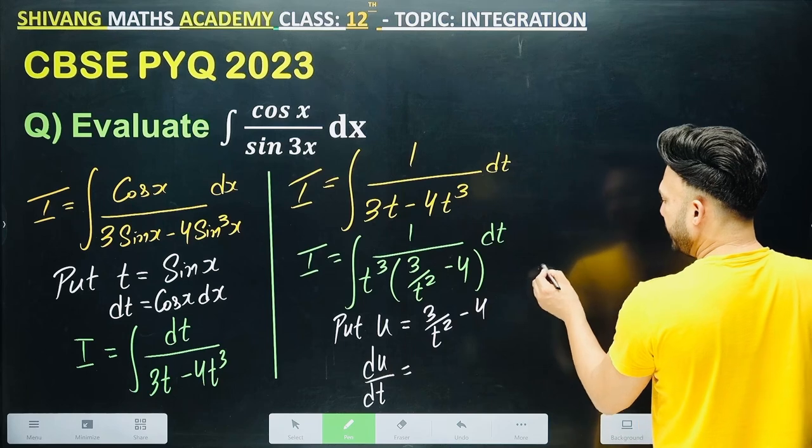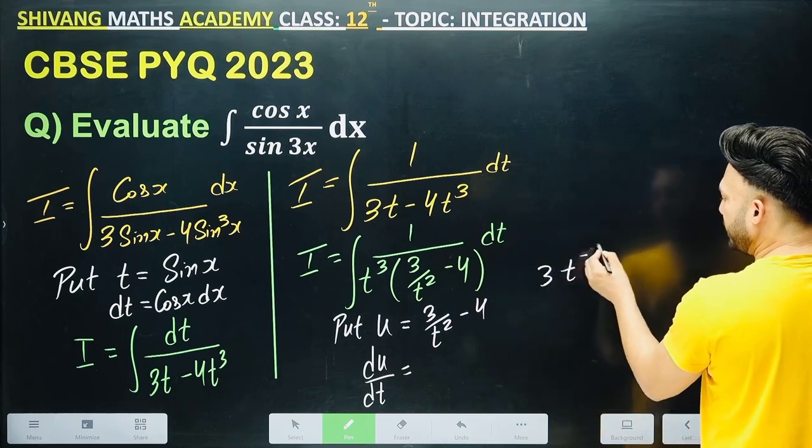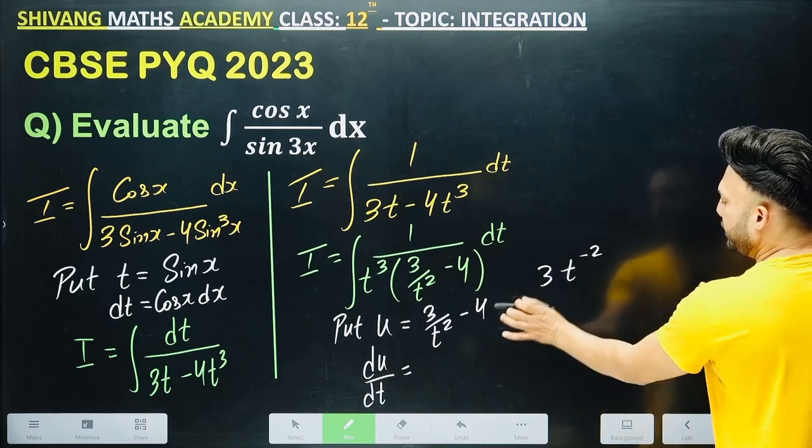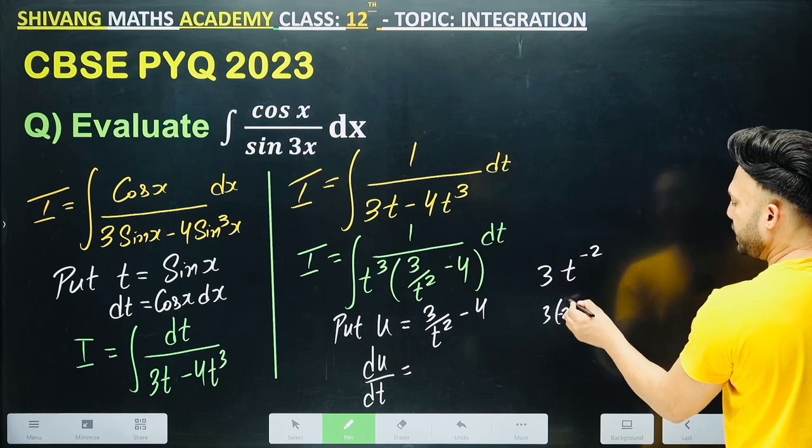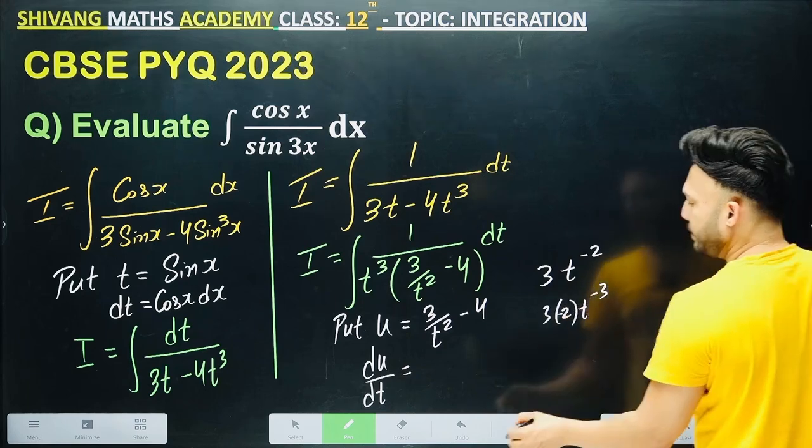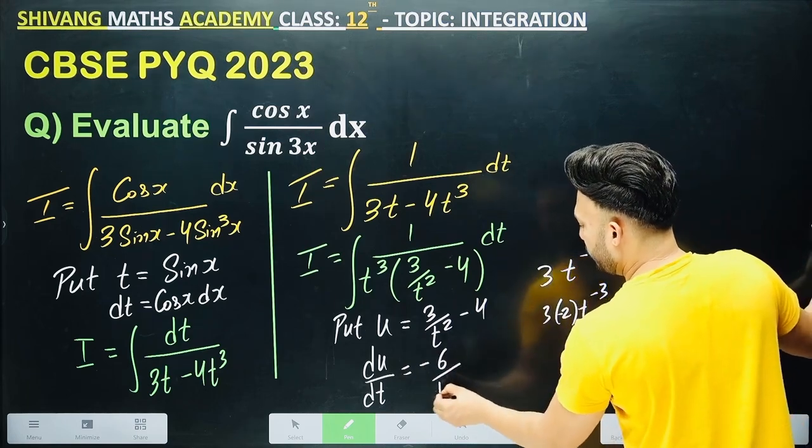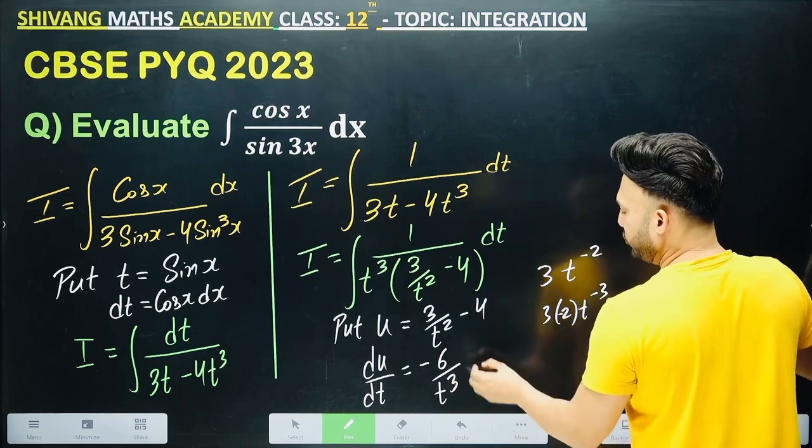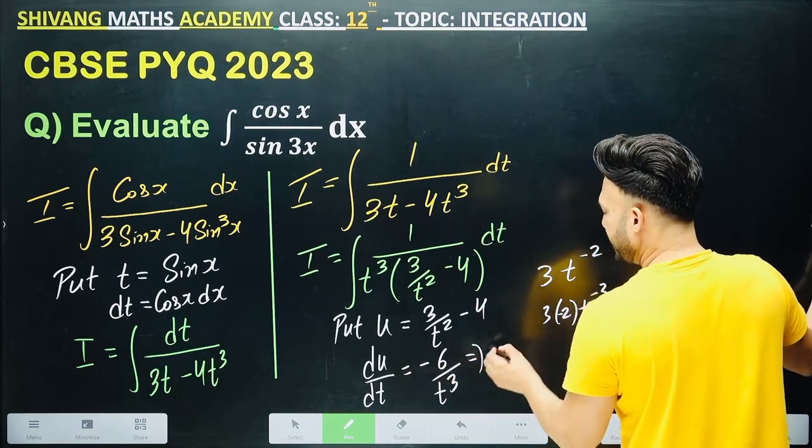So it will go up. It is like this. Take it up. T minus 2. It will become 3 times minus 2t minus 3. So this will become minus 6t minus 4 will become 0.